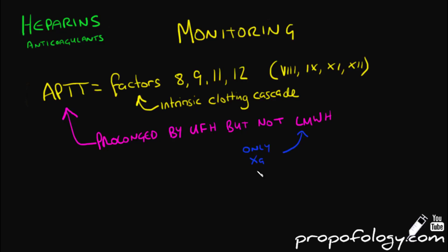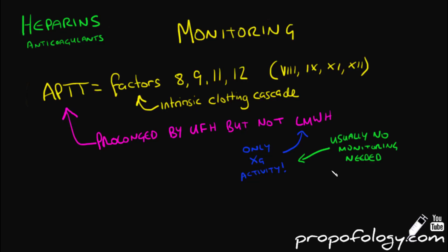You don't usually need to monitor low molecular weight heparins like enoxaparin, but should the need arise, you can perform a factor 10a level. You might see some change in APTT with low molecular weight heparins but not enough to clinically correlate it.